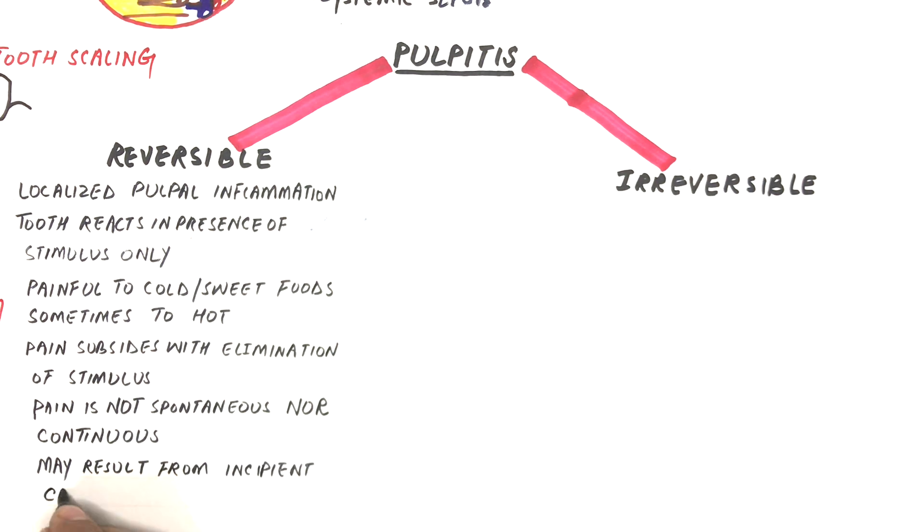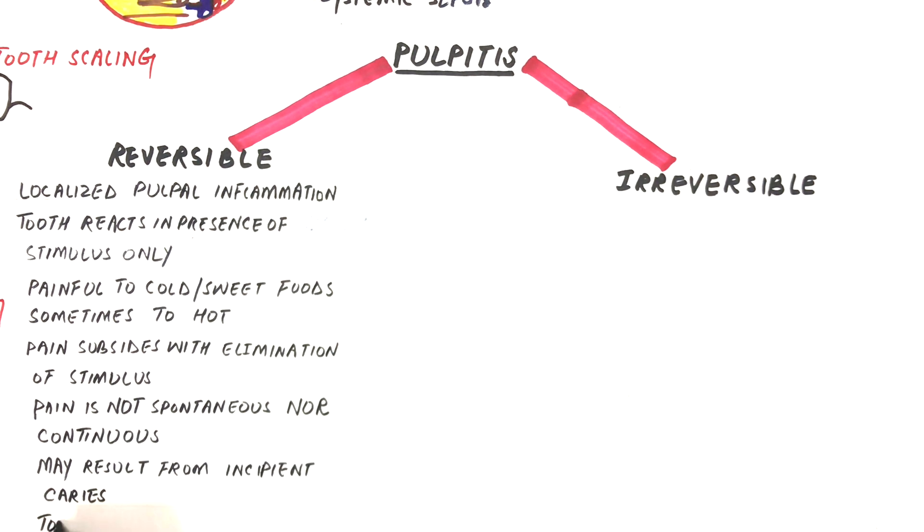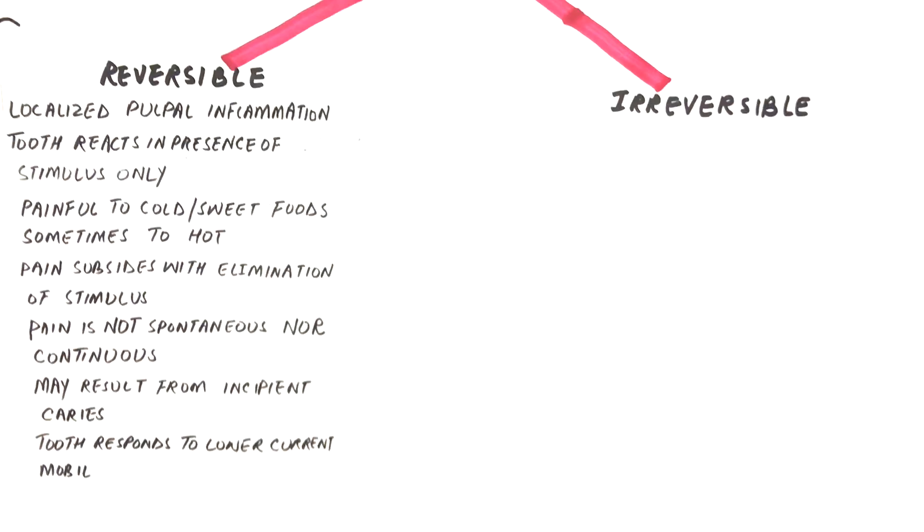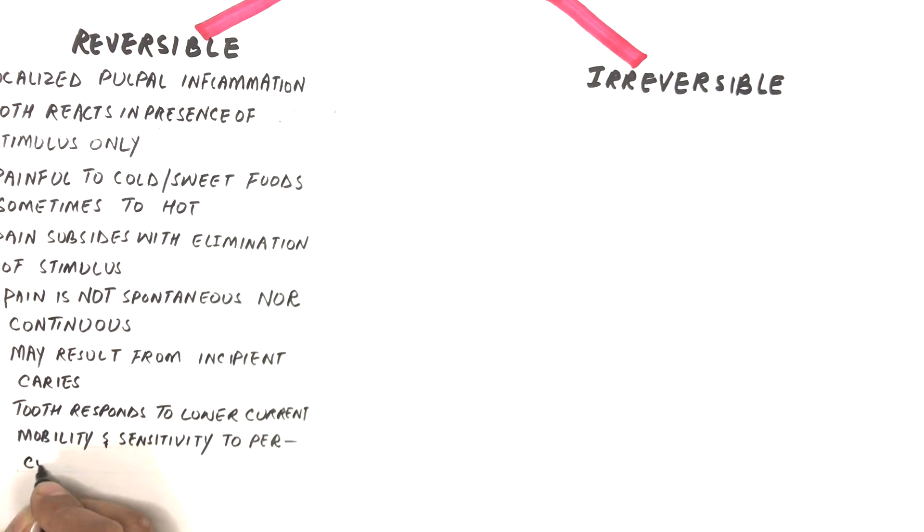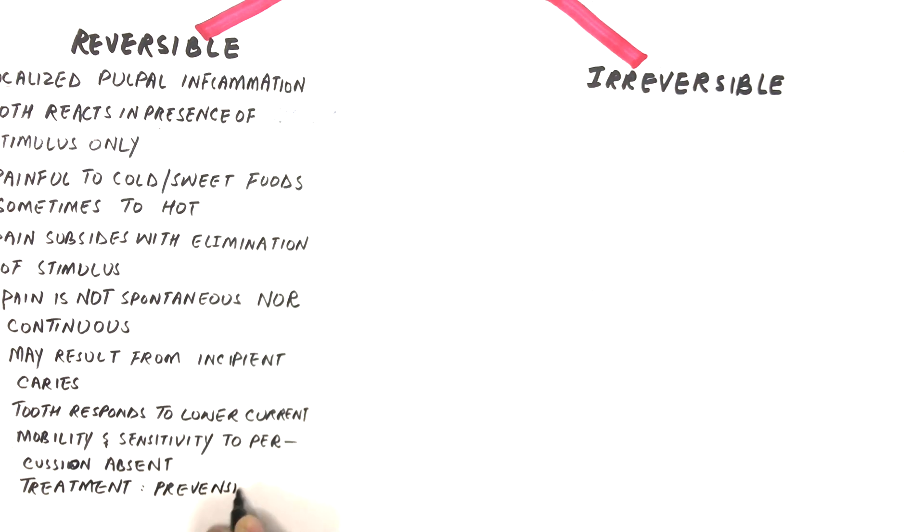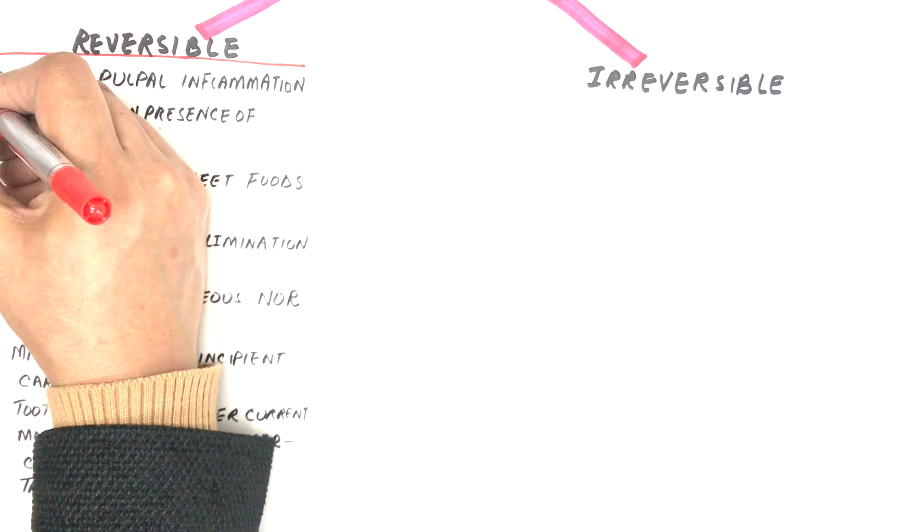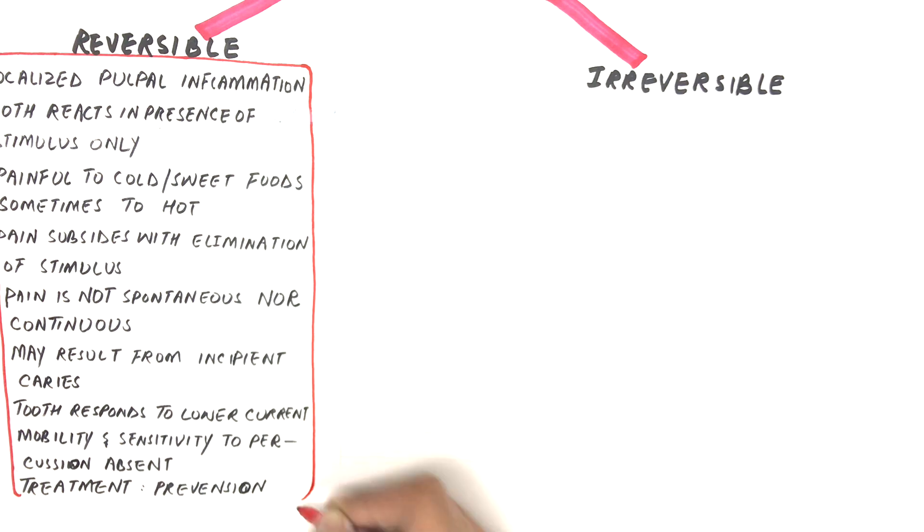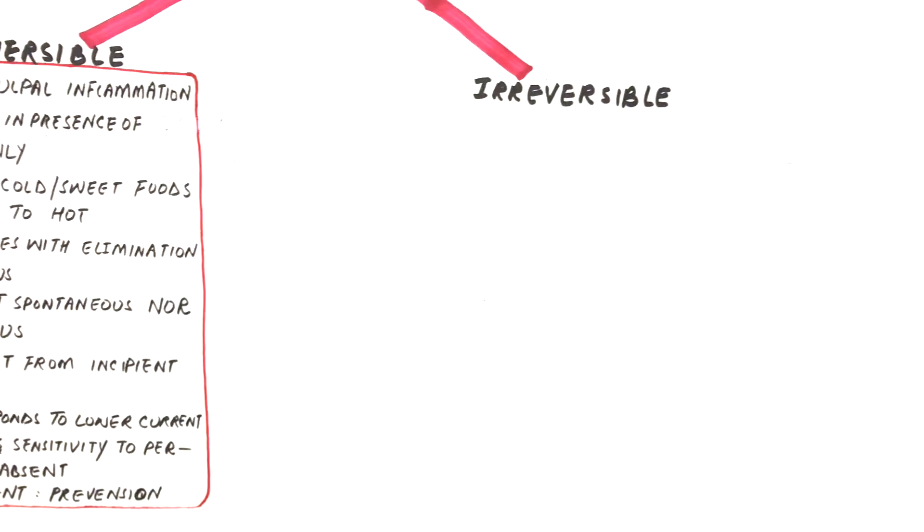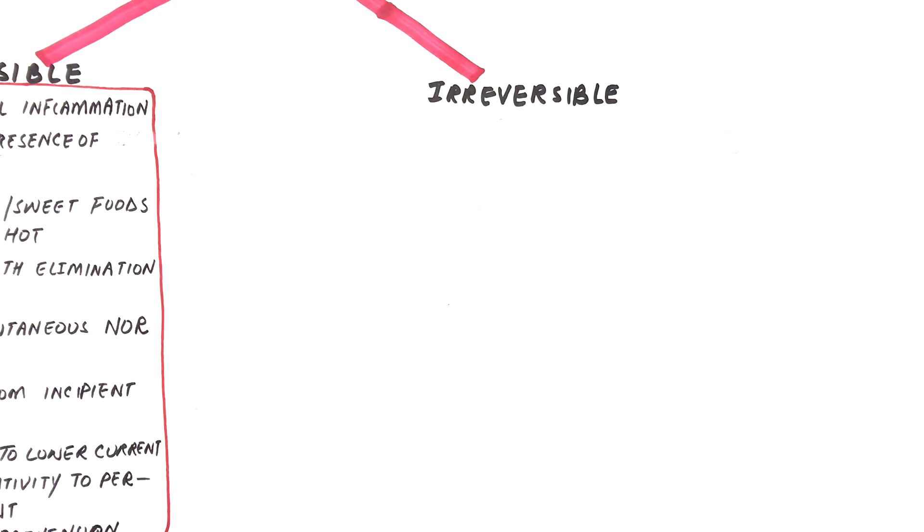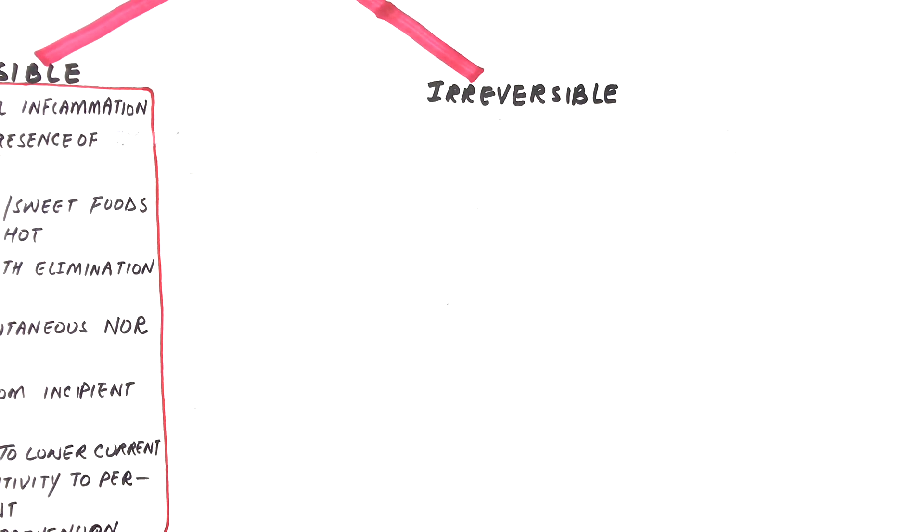It may result from incipient caries also called early decay. Tooth responds to electric pulp testing at lower levels of current. Mobility and sensitivity to percussion is absent. The treatment for reversible pulpitis is simply prevention. Tooth does not require any endodontic therapy. In case of incipient caries, it's resolved on removal of caries and proper restoration of the tooth.